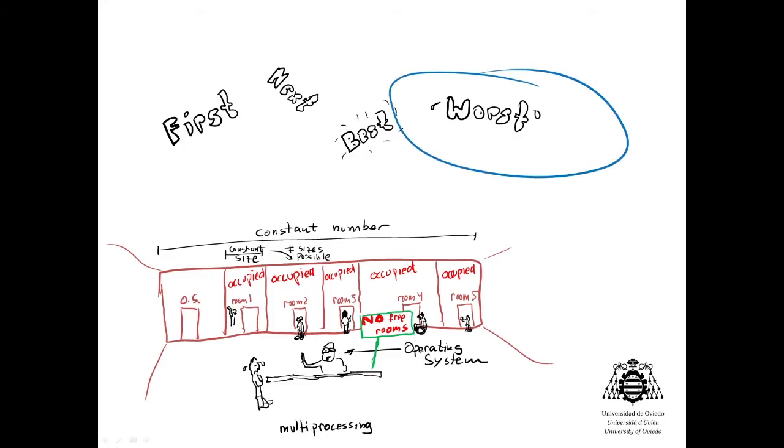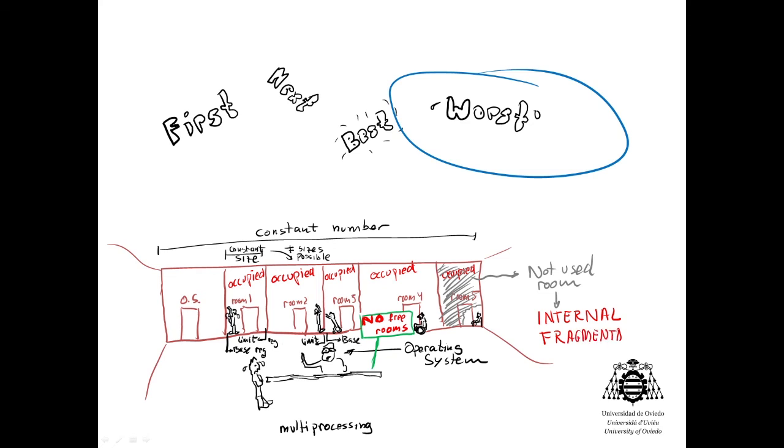Now, we need to forbid processes to access not only the operating system address space, but as well that of other processes. Again, we will use base and limit registers for each process. This implementation, sadly, generates the so-called internal fragmentation: free bytes inside a used partition that cannot be used until the process is removed.